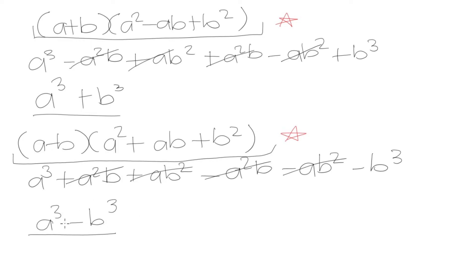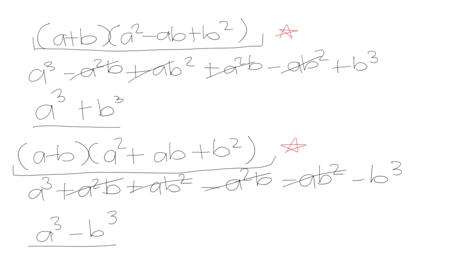When you're looking at a difference of cubes, because it has a minus sign, our first sign in the factored form will also be minus, and the second sign is the opposite. For the sum of two cubes, we have a plus sign first, then the opposite sign. For a difference, we have the minus sign first, then the opposite sign. The last term, b squared, is always going to be positive. Let's go over some examples where we can use these formulas when factoring sums and differences of cubes.